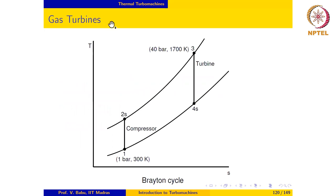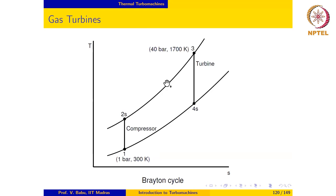Gas turbines use both axial compressors and axial turbines, and you should be familiar with gas turbines from your applied thermodynamics course. Gas turbines typically operate in a Brayton cycle. In the basic Brayton cycle, air under ambient conditions enters the compressor, which is a steady flow device.